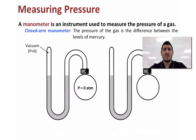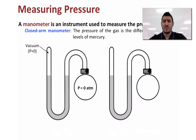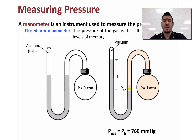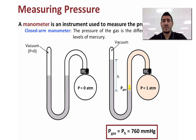In a closed arm manometer, the pressure of the gas is the difference between the levels of mercury. Before we fill any gas inside, both levels are equal. If we fill a gas at one atmosphere pressure, the difference in the two levels equals 760 millimeter Hg. Using a closed arm manometer, the pressure of the gas equals the pressure exerted from the difference in mercury levels — simply, pressure of the gas equals h.